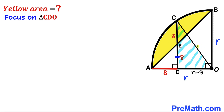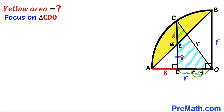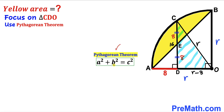Focusing on right triangle CDO: CO is the radius of the quarter circle, so CO equals r. The full side CD equals 8 plus 8, which is 16. And side DO equals r minus 8. Applying the Pythagorean theorem: (r − 8)² + 16² = r².